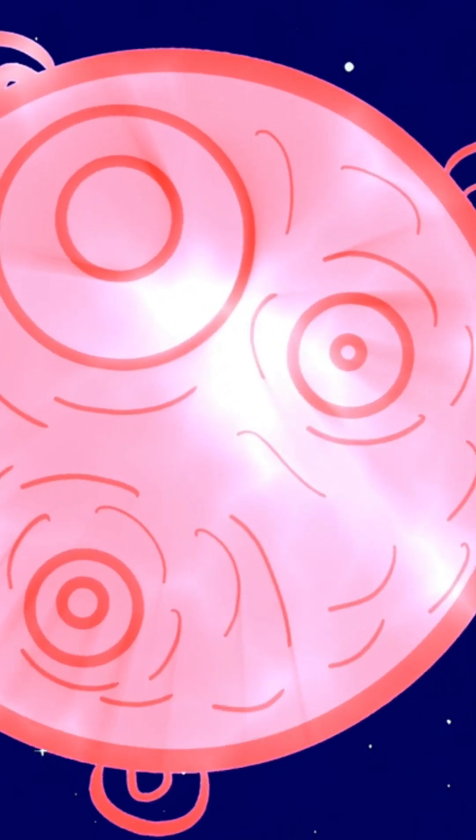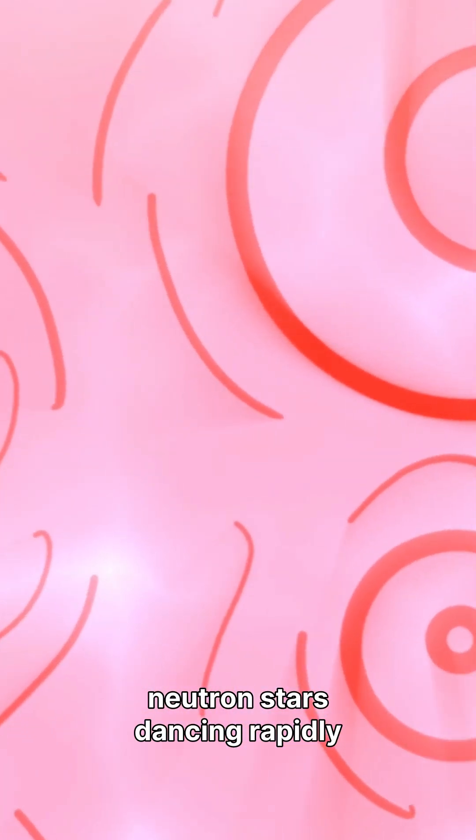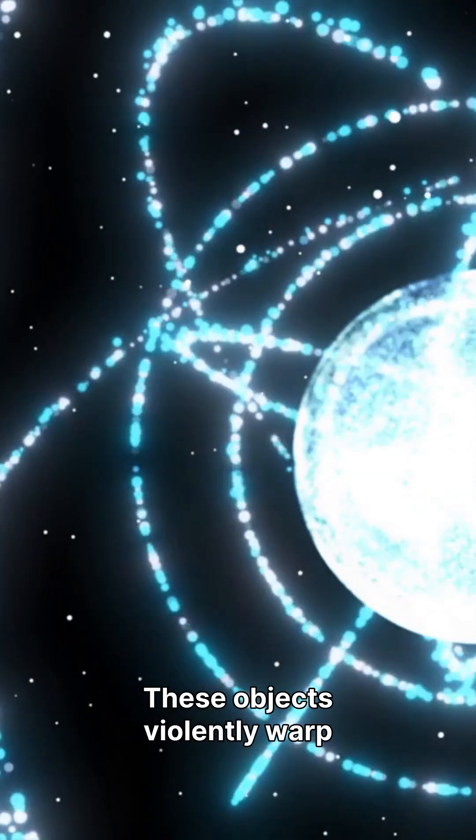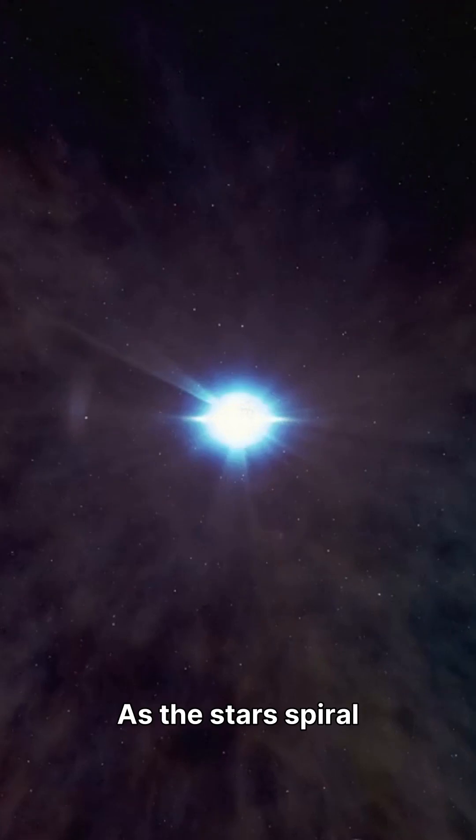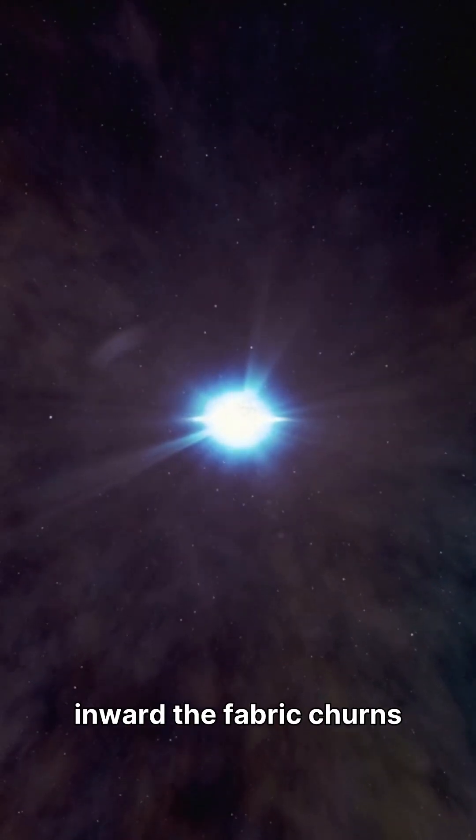Imagine two incredibly dense neutron stars, dancing rapidly around each other. These objects violently warp the very fabric of spacetime. As the stars spiral inward, the fabric churns.